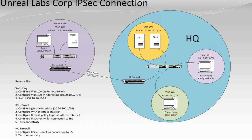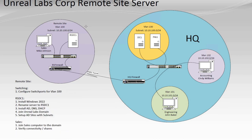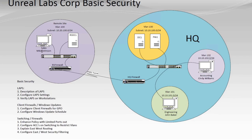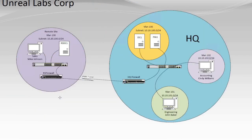Then we'll do the IPSec connection starting with that remote site, and we'll be doing the DC and the sales machine. At the end, I'll be doing some basic security — we'll add ACLs, start denying some traffic possibly over the IPSec tunnel, because we might want to limit things that Mike Johnson can see. I'd also like to do an SSL VPN into the headquarters firewall and then have some traffic go over the IPSec tunnel into the remote site to emulate Mike Johnson the sales guy traveling around.